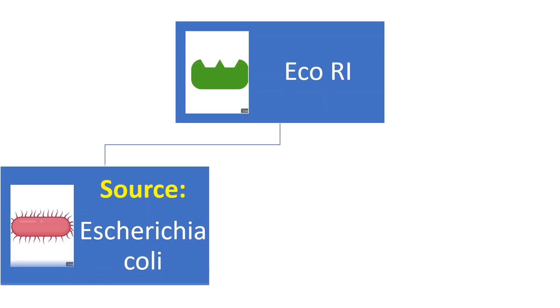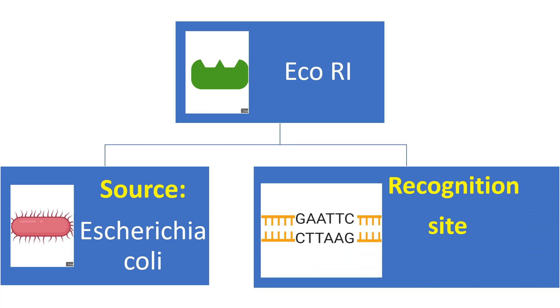Another example, ECO-R1, is extracted from bacteria Escherichia coli. Its restriction site is GAATTC, and it cleaves between G and A on both sides.